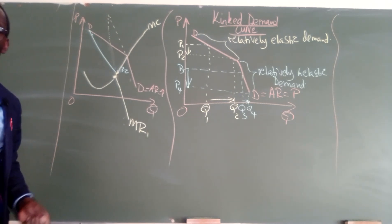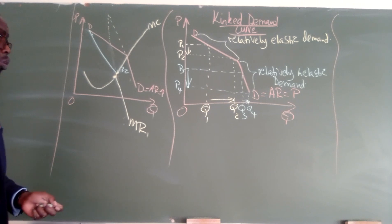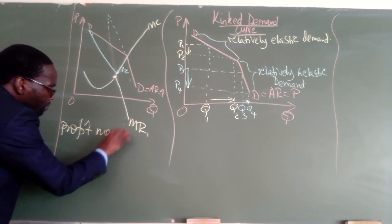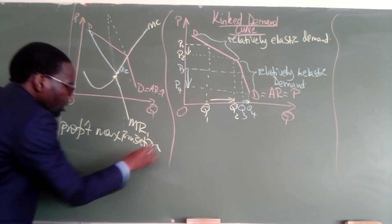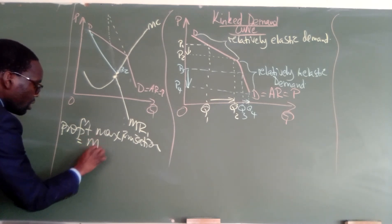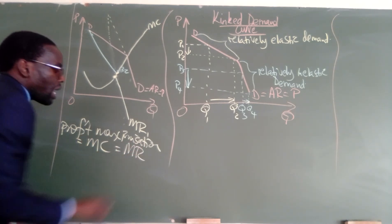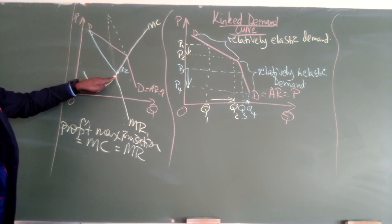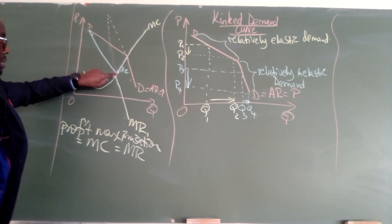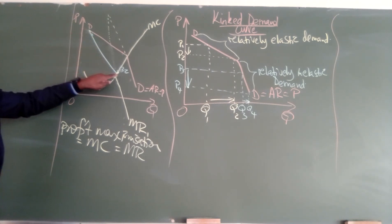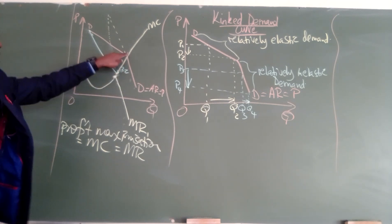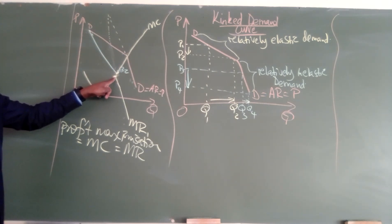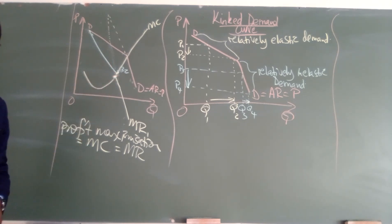The next thing we need to understand is where profit is maximized. Profits are maximized where MC equals MR. Looking at the top demand curve, profits are maximized at one point, and for the relatively inelastic demand curve, profits are maximized at another point.